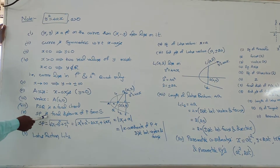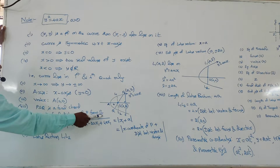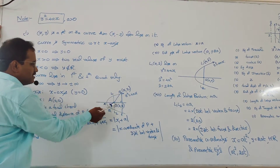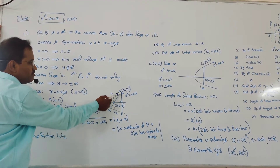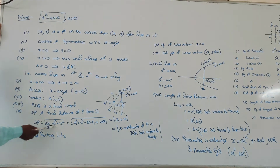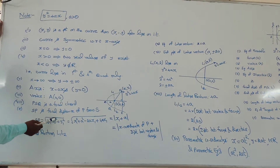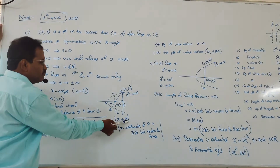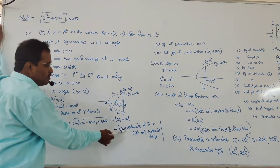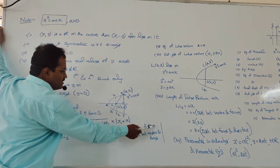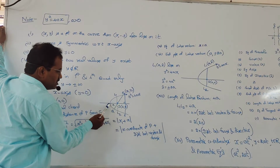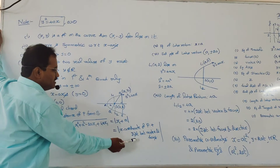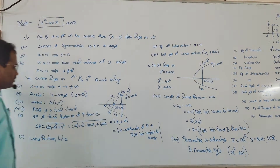ST is the focal distance of T from S. If I take T as (x₁, y₁), then the focal distance from S can be derived as √((x₁ − A)² + y₁²). When you simplify, you get x₁ + A. That is, the x-coordinate of T plus A, which corresponds to the distance between the vertex and the focus, gives the focal distance.